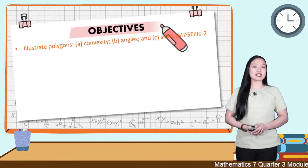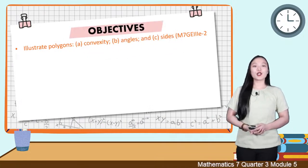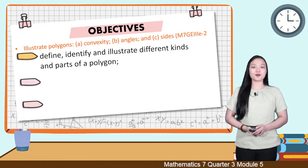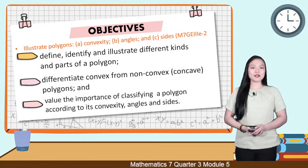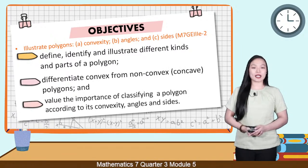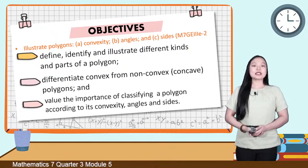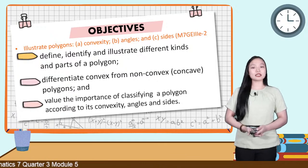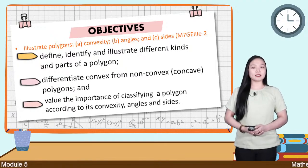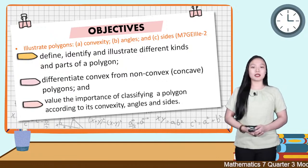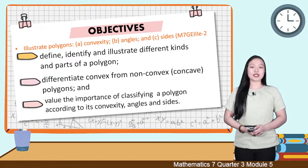At the end of this lesson, learners are expected to: define, identify, and illustrate different kinds of polygons according to the number of sides; differentiate convex from non-convex or concave polygons; and value the importance of classifying a polygon according to its convexity, angles, and sides.